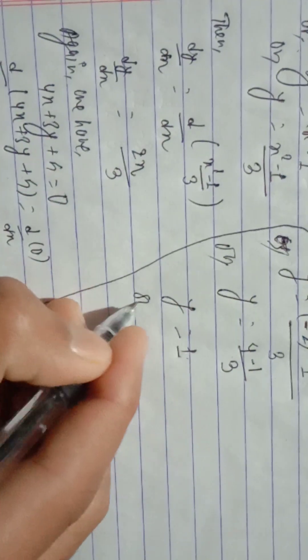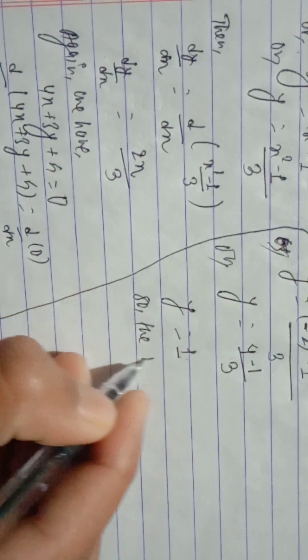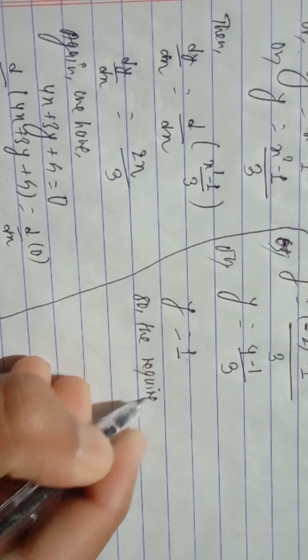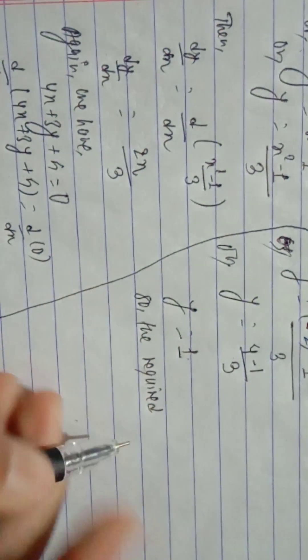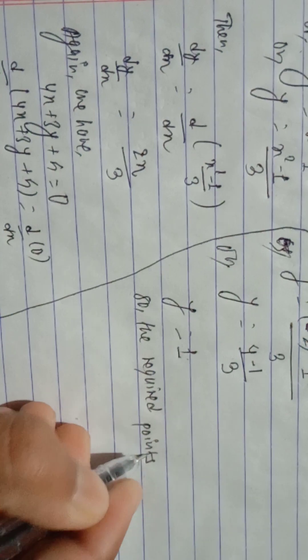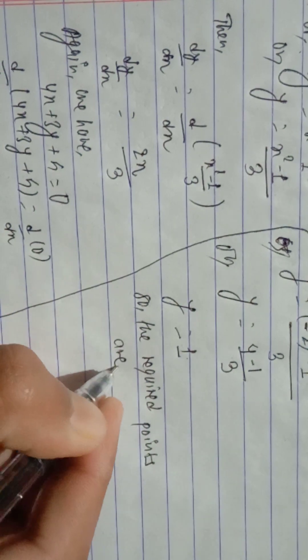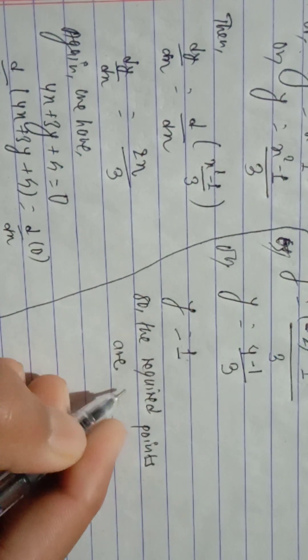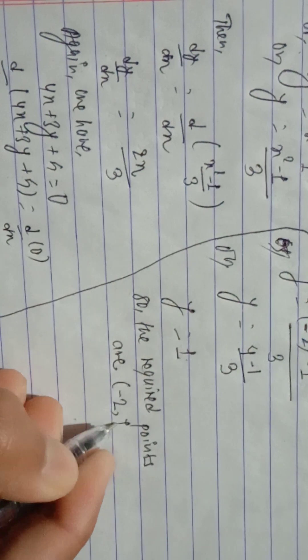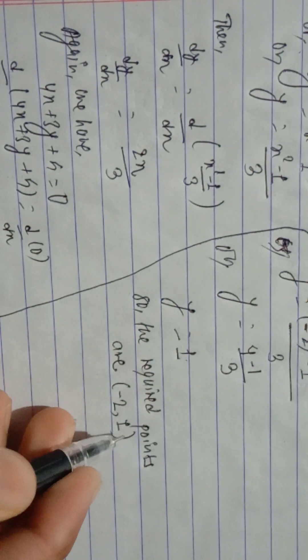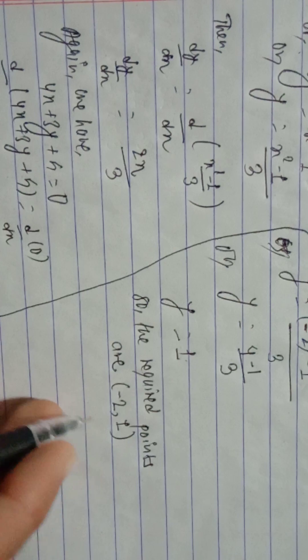So the required point is minus 2, 1. x is minus 2 and y is 1.